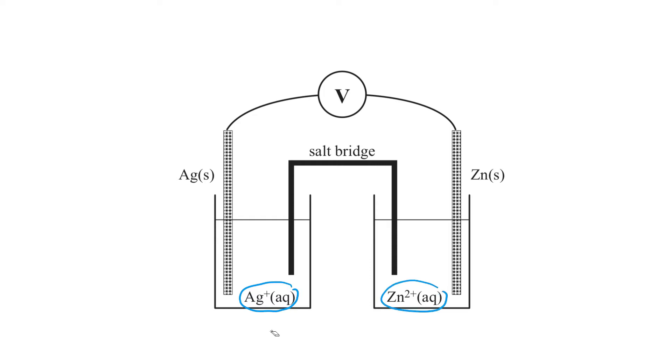Now, using the electrochemical series, which is found in your data book, you will find that silver is the strongest oxidant present. Therefore, it itself will be reduced. Zinc is the strongest reductant present and therefore itself will be oxidized.